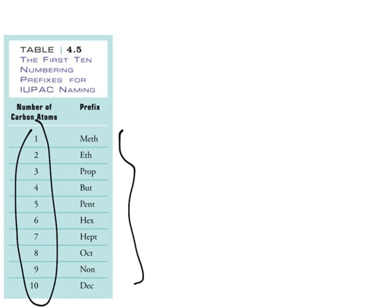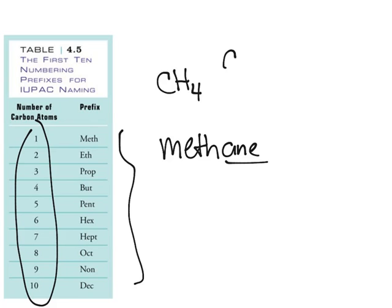For example, if you have CH4, you only have one carbon. So you start with meth. And then, if it's only one carbon and no double bonds or a straight chain, you would add the -ane part, because alkanes always end in -ane.